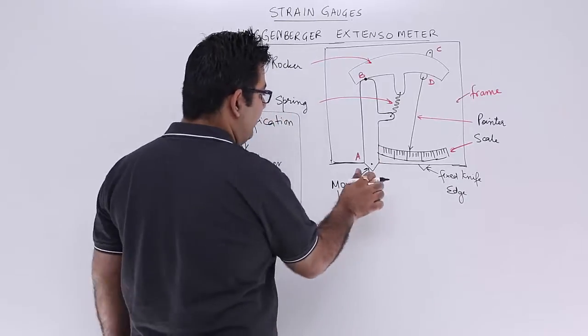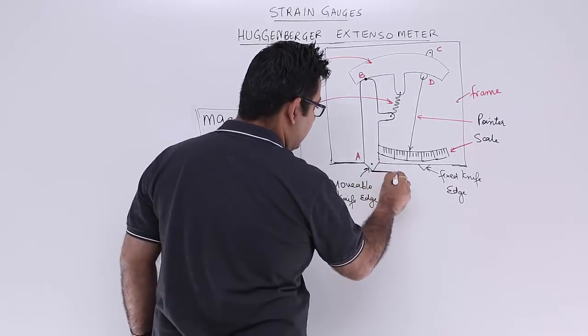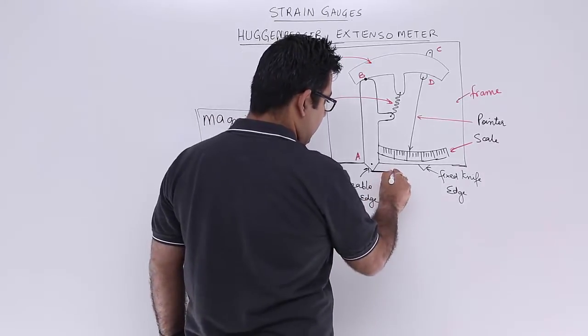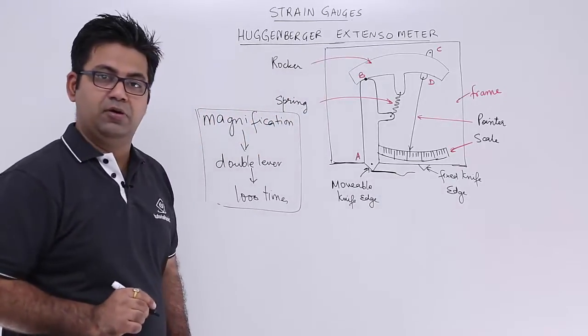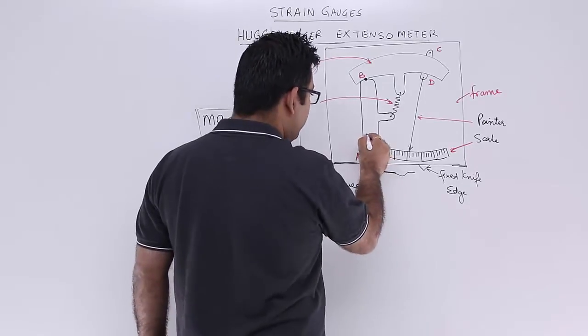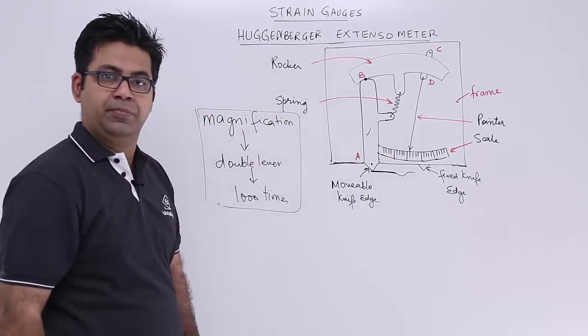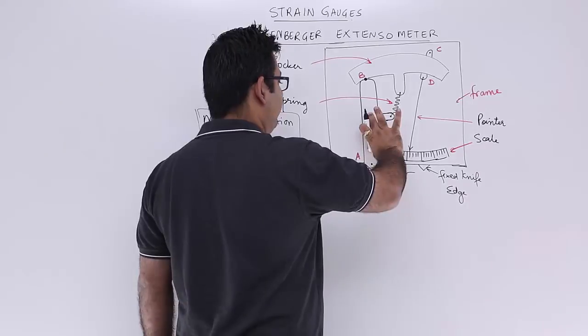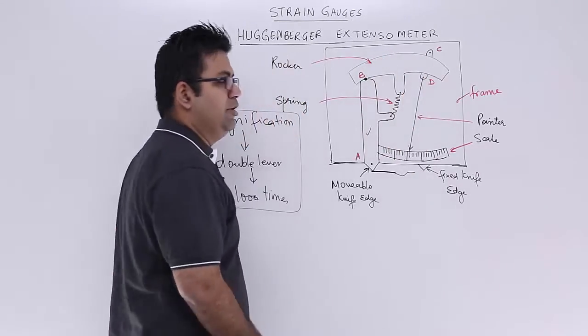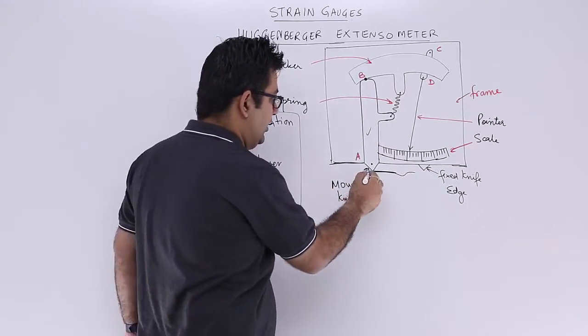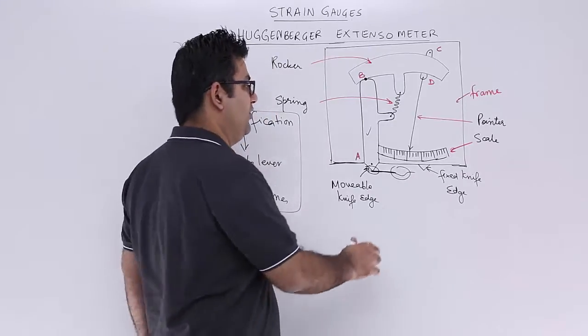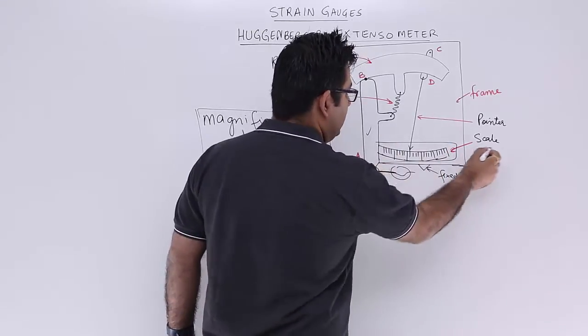So this knife edge can actually press against the surface. And if there is certain disturbances in the smoothness of the surface, there will be a movement in the knife edge. And due to this movement of the knife edge this rocker will move, and this rocker will make the pointer move. And the amount of knife edge movement or the amount of deviation from the smoothness of the surface can be read on this scale.